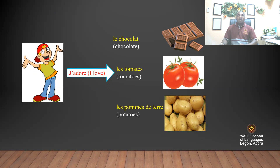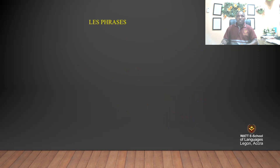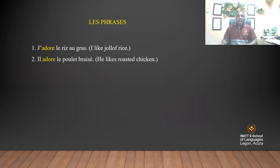If you want to say 'I love,' you say j'adore and add the thing that you like or love. More sentences: j'adore le riz au gras — I love rice. J'adore le poulet braisé — I love roasted chicken. J'adore jouer au football — I like playing football.